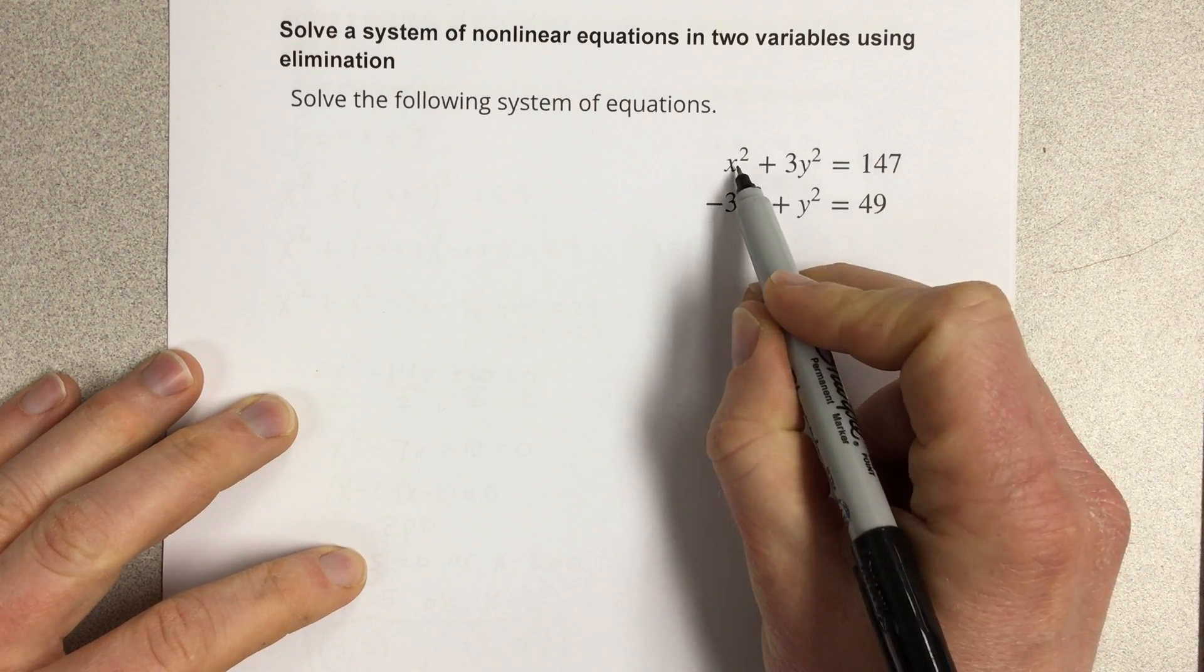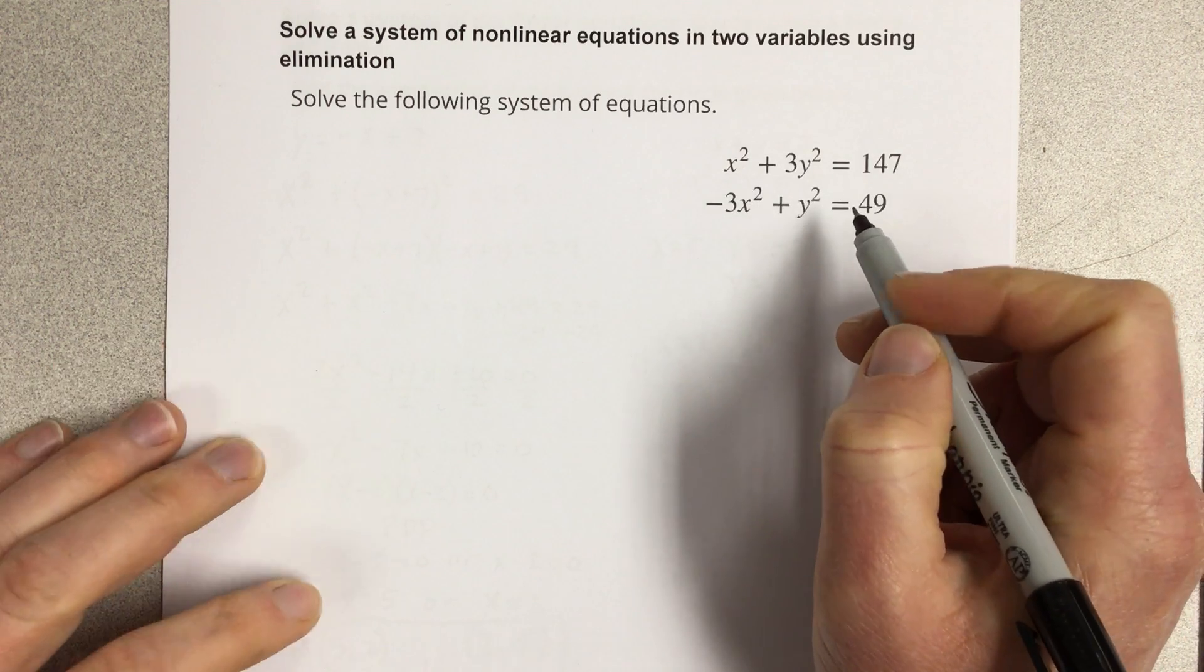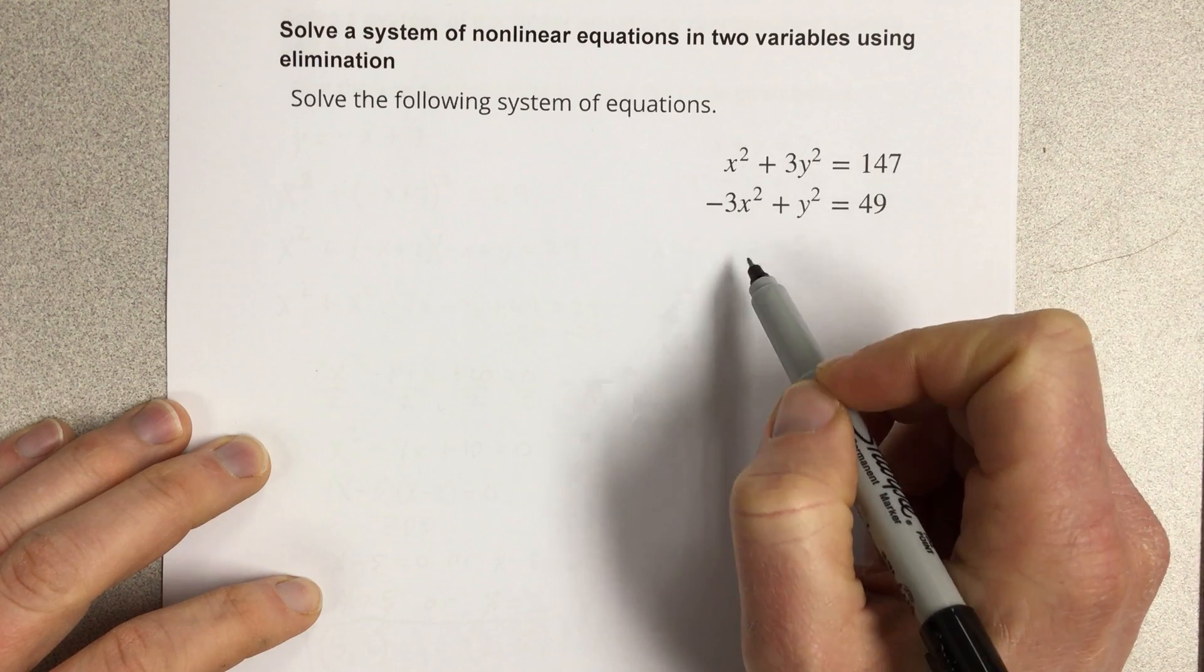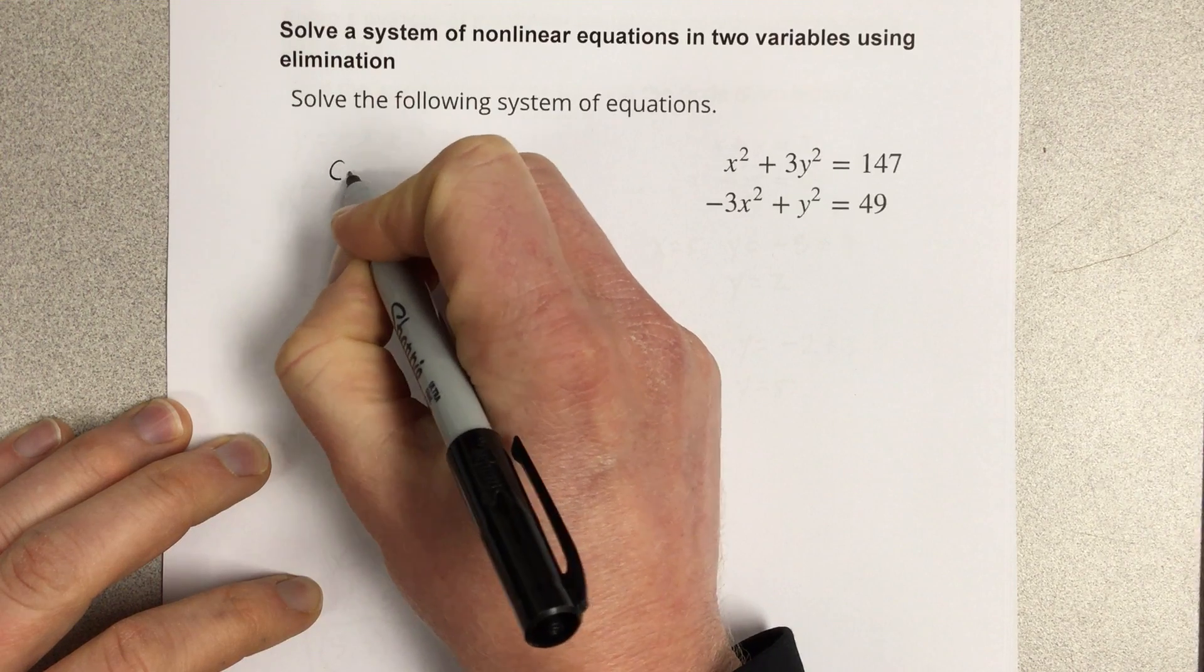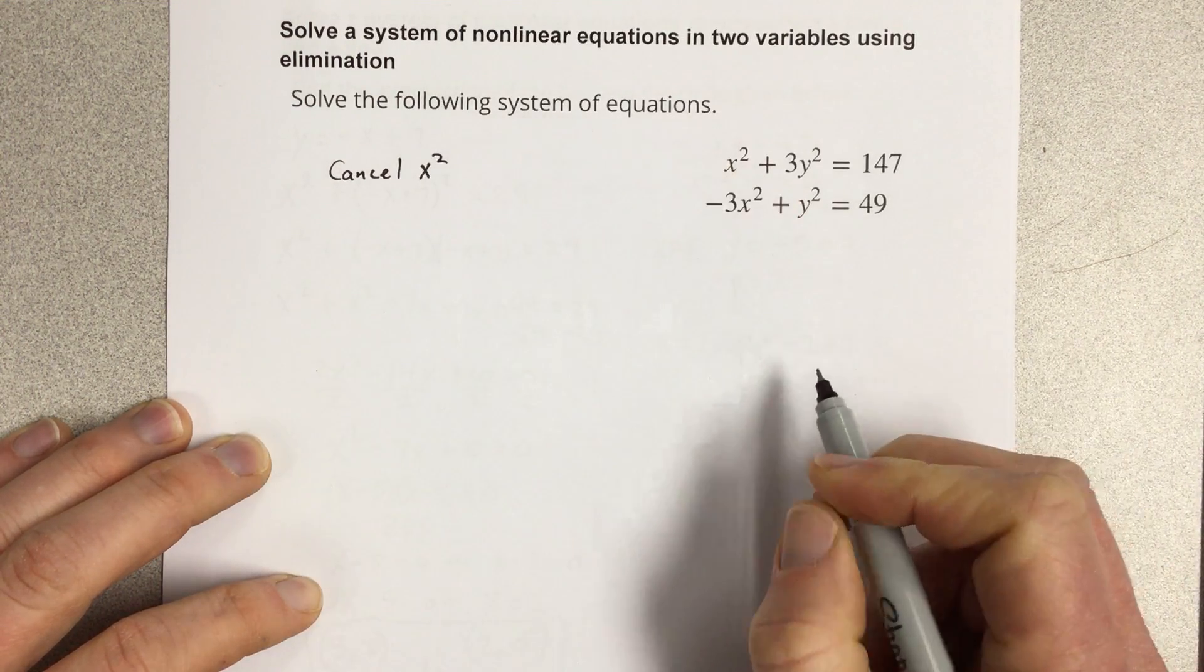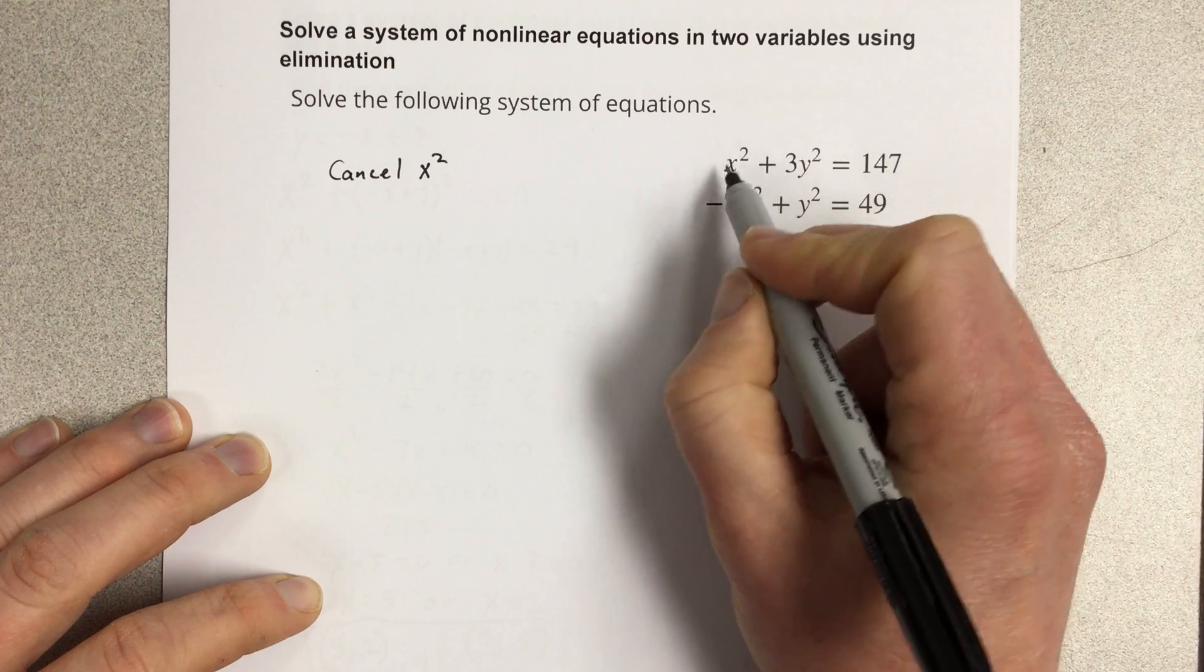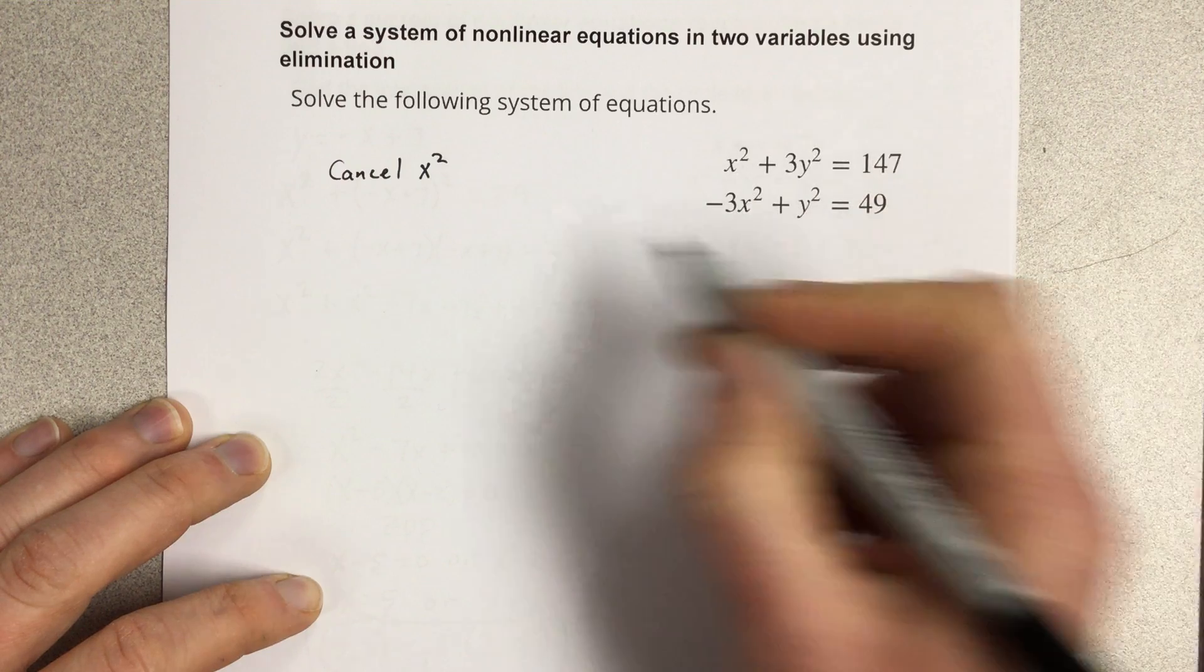You can notice that we have x² in each equation and y² in each equation. We're going to use elimination to solve this system. I'm going to cancel the x² term. To cancel the x² term, I'm going to multiply the top equation by 3 because that will make it the opposite sign of the bottom equation.